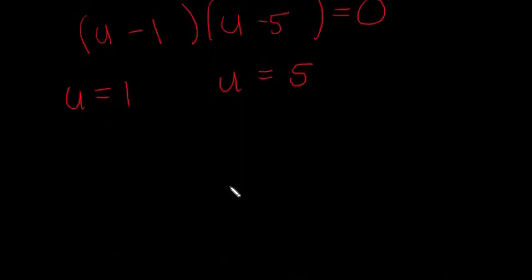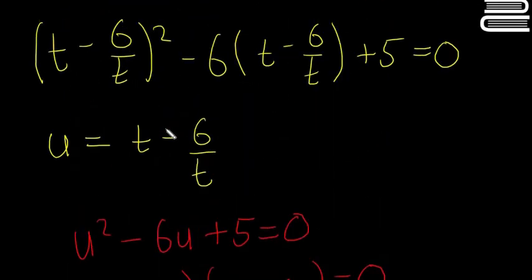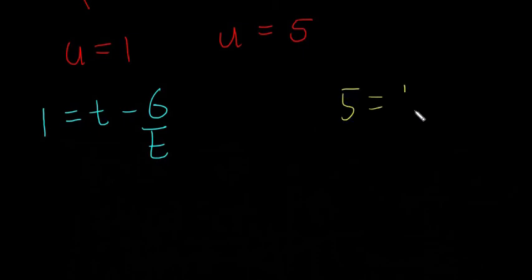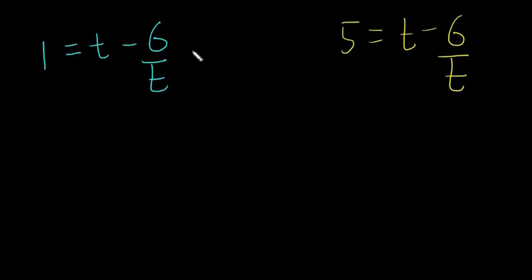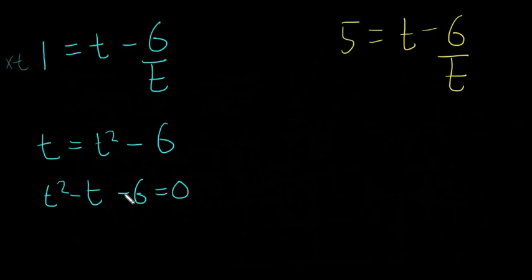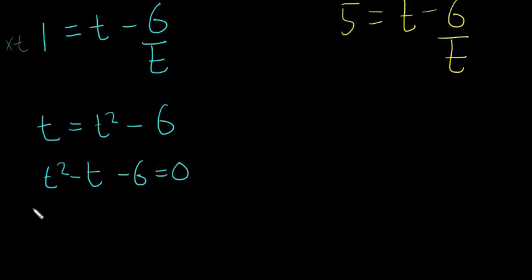Remembering that U equals t minus 6 over t, we now substitute back. For U equals 1: we have 1 equals t minus 6 over t. Multiplying everything by t gives t equals t squared minus 6, and rearranging gives t squared minus t minus 6 equals 0. We now need to factorise this quadratic.